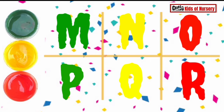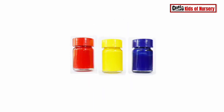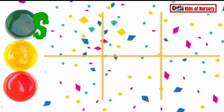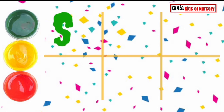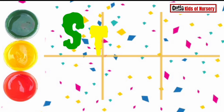M is for Mango, N is for Nest, O is for Orange, P is for Parrot, Q is for Queen.